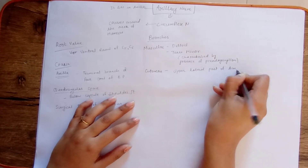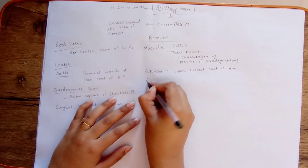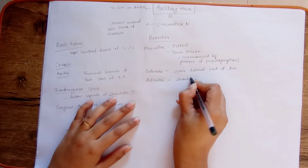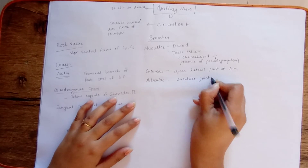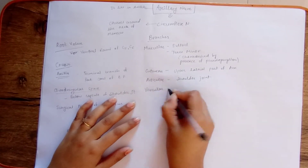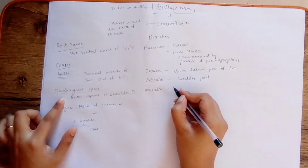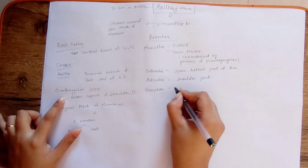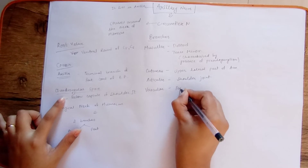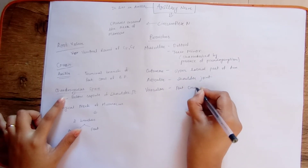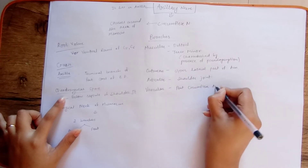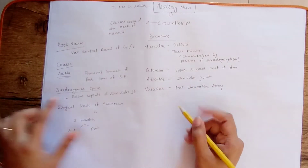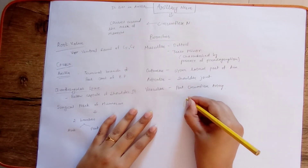Then there are articular branches, which supply the shoulder joint. Lastly, the vascular branch: in the quadrangular space it gives a branch for the posterior circumflex artery.